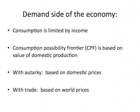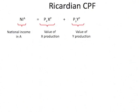So we can depict the consumption possibility frontier as related to national income, which is equal to the value of the goods that are produced — both X and Y in the economy — giving us the total amount of national income. And we can rearrange this in a way that's analogous to the Ricardian model employment line, which gave us the PPF.